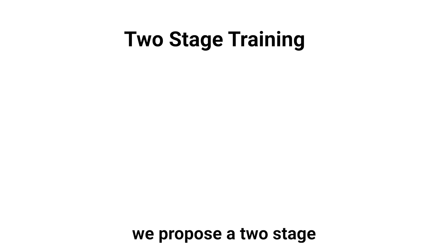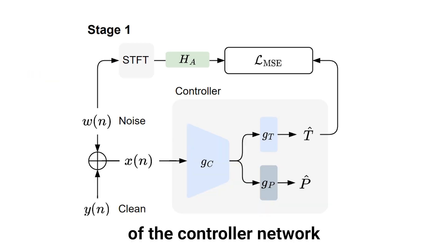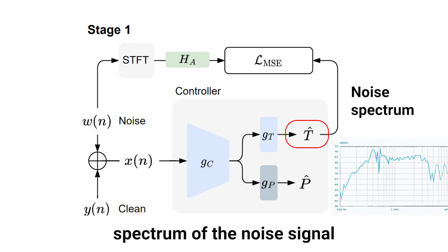To address this, we propose a two-stage training procedure. In the first stage, we train the main portion of the controller network to estimate the average spectrum of the noise signal in a supervised training task.